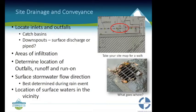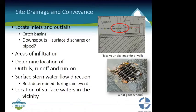For drainage and conveyance, locate all inlets and outfalls including catch basins, downspouts, and surface discharges — noting whether downspouts discharge to the surface or are piped directly to the storm system. Mark any areas where stormwater will infiltrate. Determine the location of your outfalls and where runoff and run-on might affect your property — including where your neighbor's stormwater might come onto your facility. Note surface stormwater flow direction and the location of surface waters like wetlands or nearby creeks.